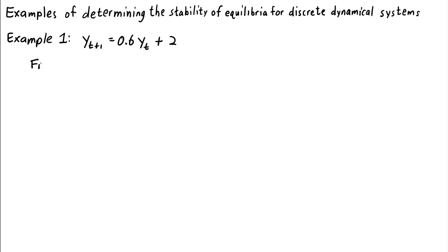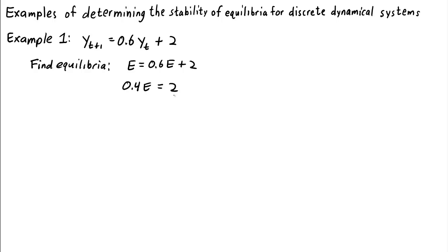The first step in determining the stability of an equilibrium is to find the equilibria. We plug in the same number, let's say e, for all values of y, and then solve for e. We subtract 0.6e from both sides to get 0.4e = 2, which means e = 2/0.4, or e = 5. So there's our equilibrium.